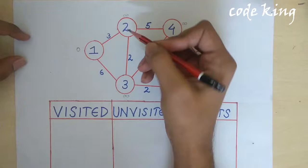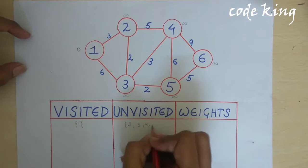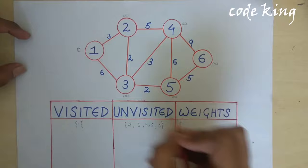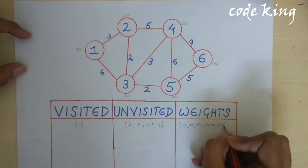Now let's mark the source as visited and write the unvisited nodes: 2, 3, 4, 5, 6. All these nodes are unvisited. The weight for node 1 is 0, for node 2 it's infinity, for node 3 it's infinity, and for all the other nodes it's infinity as well.